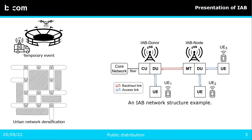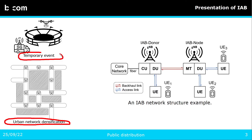Two use cases are frequently presented by removing the constraints of a wired backhaul: you can use IAB networks for urban network densification, and also during temporary events where traffic increases significantly.